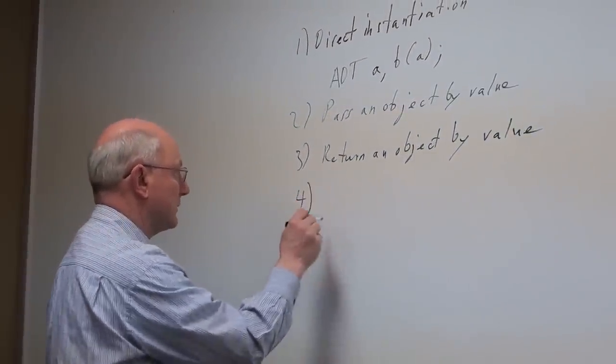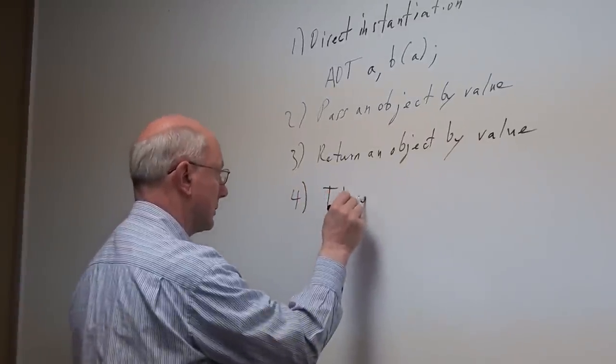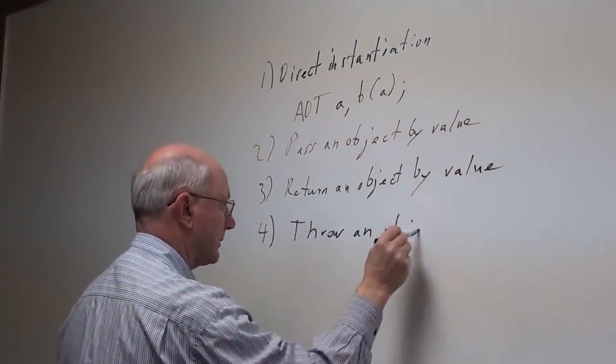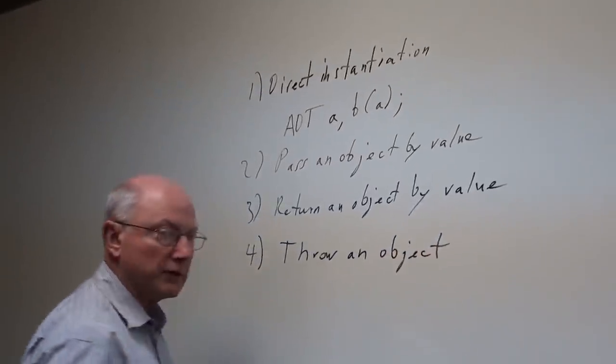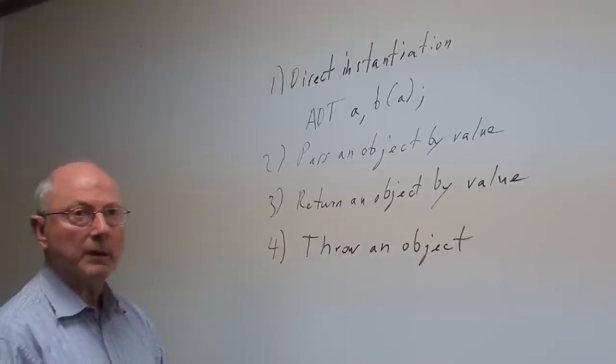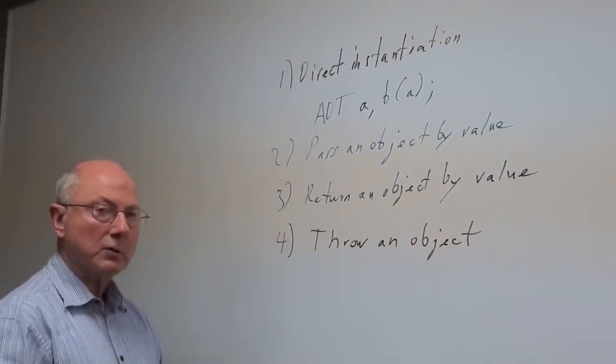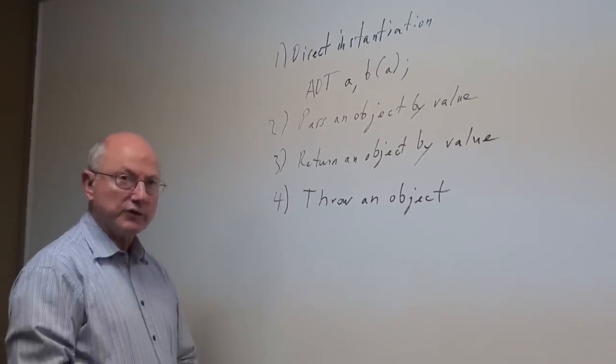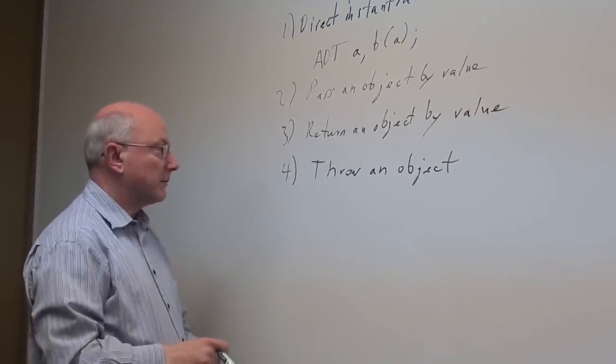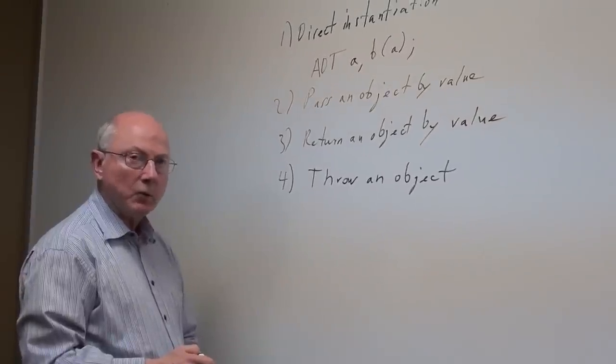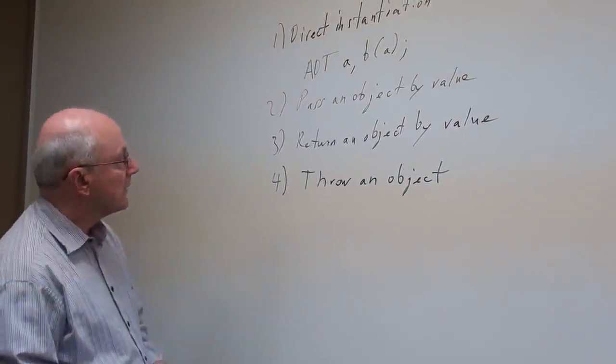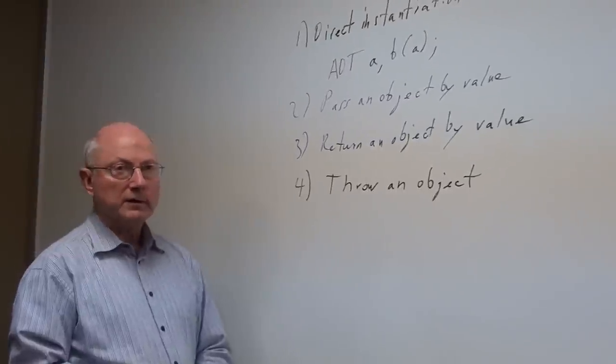Fourth situation is when you throw an object out of a function. That is the throw statement. Of course, the locally declared object will disappear, but to preserve its value, the compiler will again invoke the copy constructor. Now, as a footnote to these four scenarios,